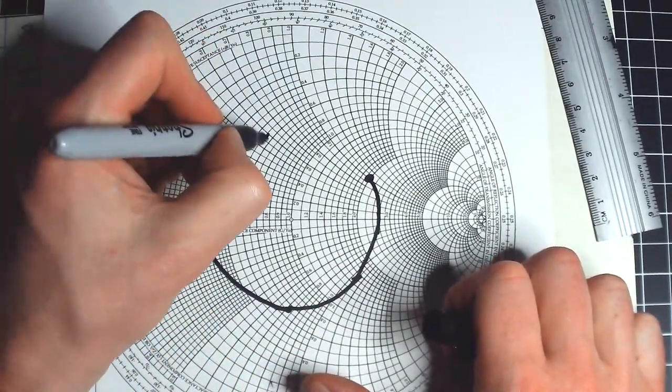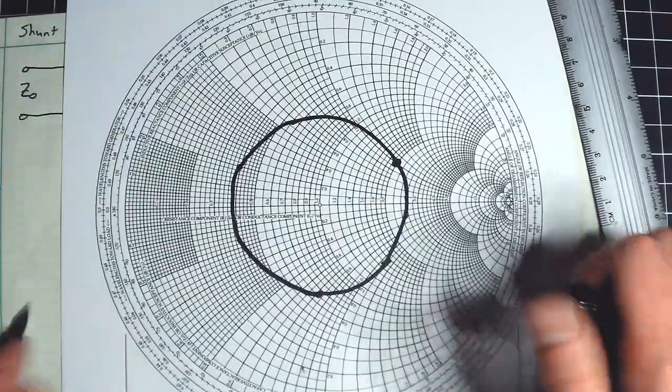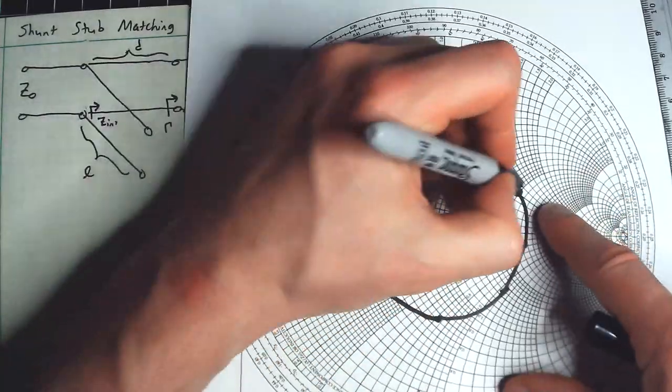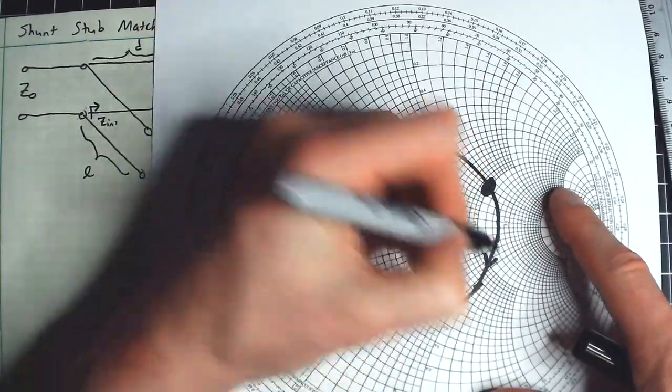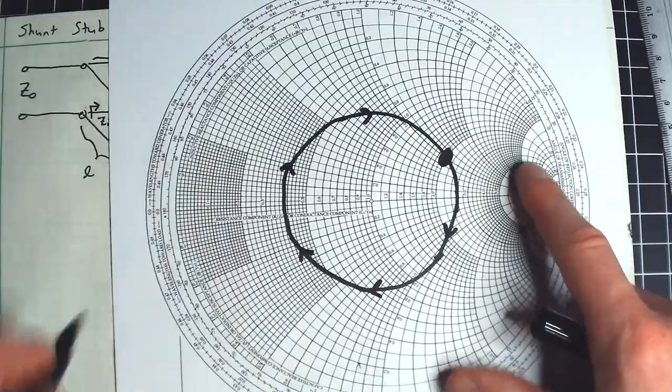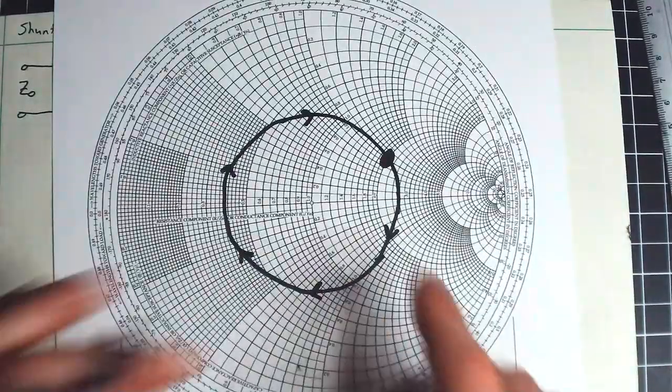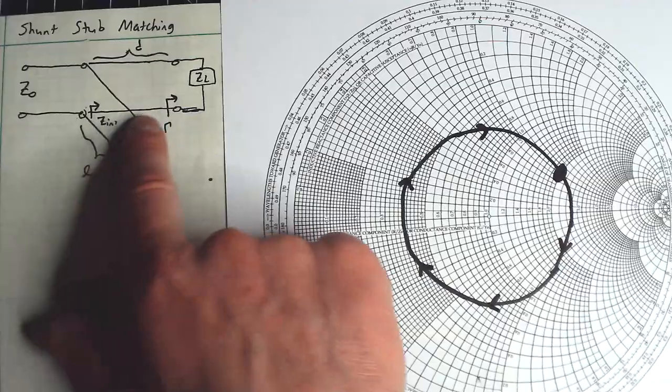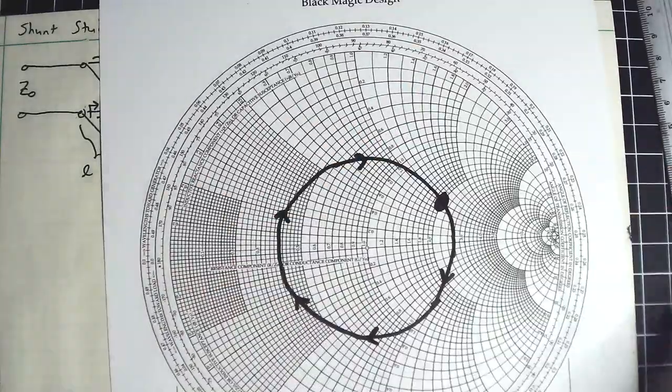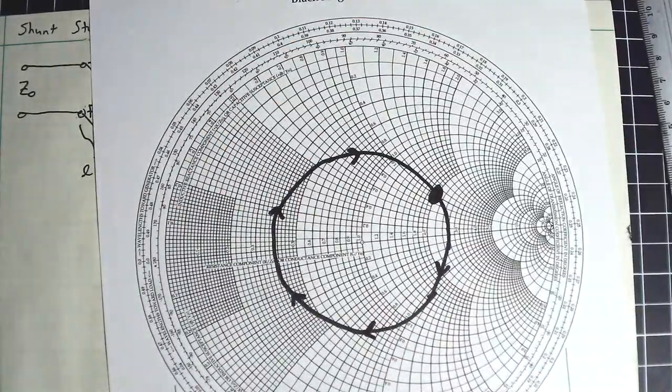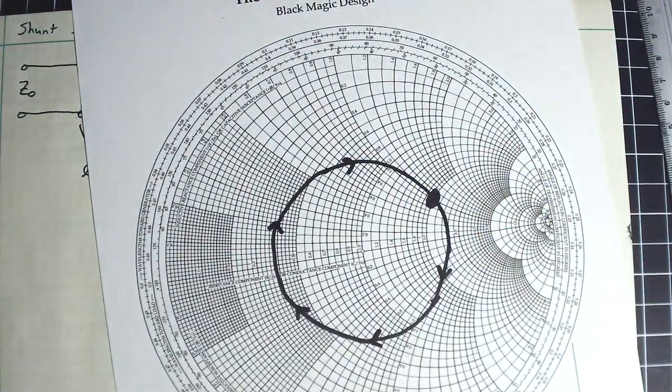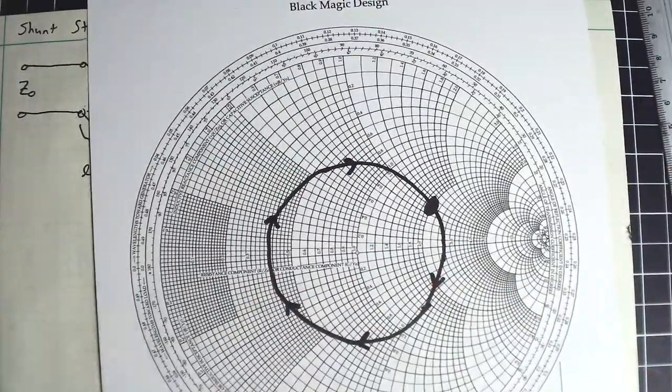As I move D down the line, some number of wavelengths, this little point here is going to traverse this circle in the clockwise direction. Remember, that's the reflection coefficient seen looking into a transmission line. It's just the accumulated phase of going down and back, which is why you see wavelengths towards generator here. A half wavelength is one full revolution. You see 0.49 and then zero again. So 0.5 wavelengths is one full revolution here.